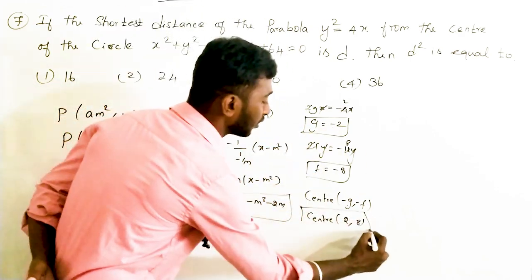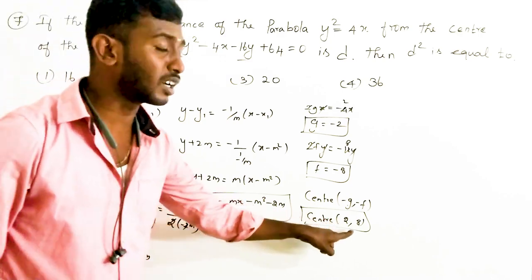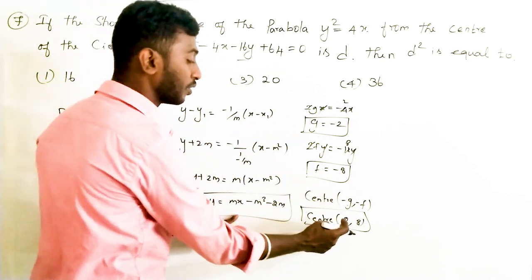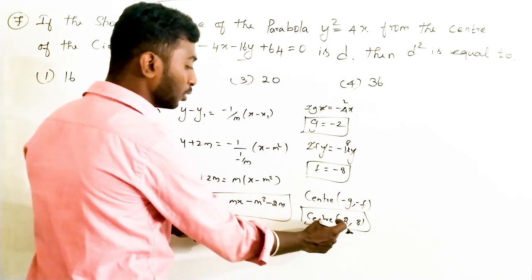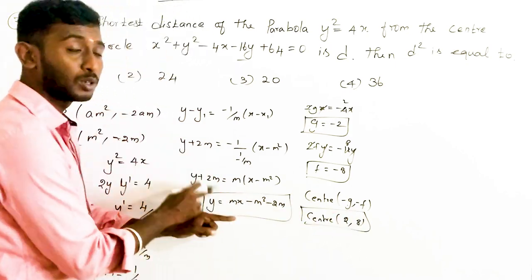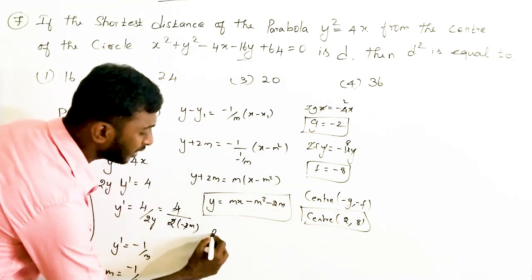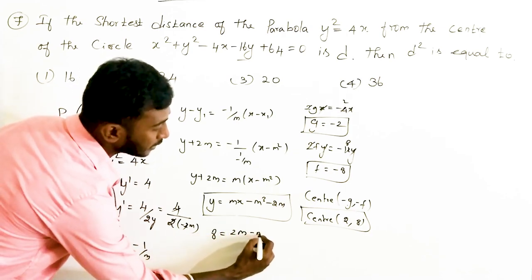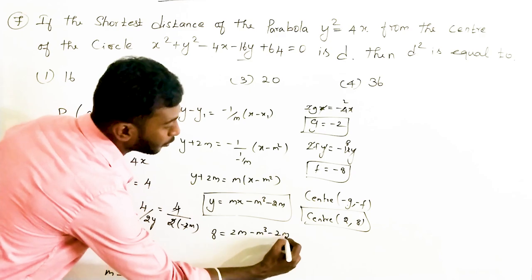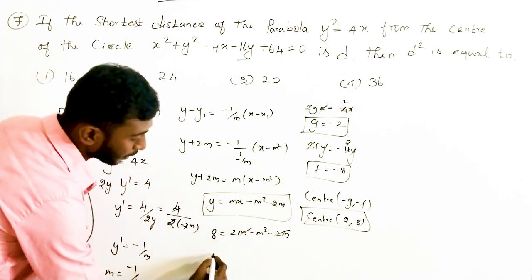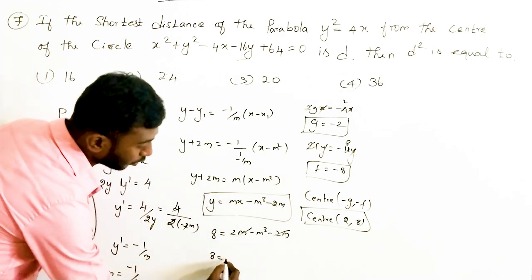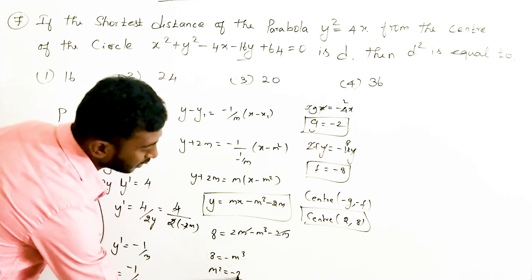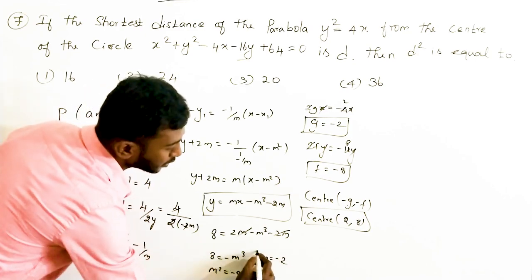The center of the circle is (2, 8). Substituting x = 2 and y = 8 into the normal equation: 8 = 2m - m³ - 2m. The 2m terms cancel, giving 8 = -m³, so m³ = -8, and therefore m = -2.